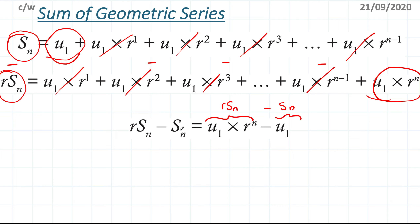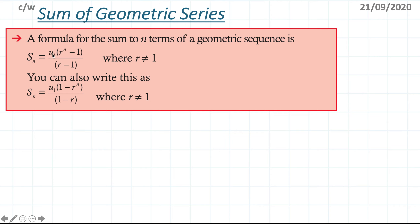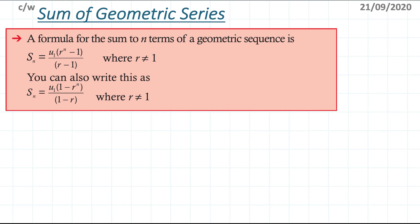Now I factor out Sn on the left-hand side to get Sn times (r minus 1), and factor out u1 on the right to get u1 times (r to the power of n minus 1). Dividing both sides by (r minus 1) gives the formula: Sn = u1 times (r^n minus 1) divided by (r minus 1). There's an alternative form where numerator and denominator are swapped in sign — just keep them consistent. Note that r must not equal 1, or you'd be dividing by zero.